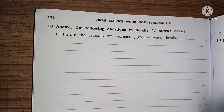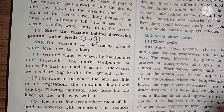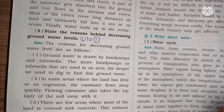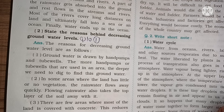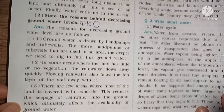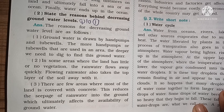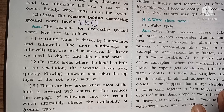Question 10 - Answer the following questions in detail. First - state the reasons for decreasing groundwater level. The answer is: first, groundwater is drawn by hand pumps and tube wells; the more hand pumps or tube wells used in an area, the deeper we need to dig to find groundwater. Second, in some areas where the land has little or no vegetation, rainwater flows away quickly and also takes the top layer of soil away. Third, in areas where most of the land is covered with concrete, this reduces the seepage of rainwater into the ground, which ultimately affects the availability of groundwater.